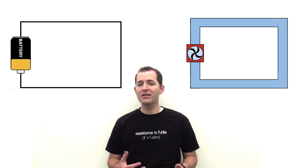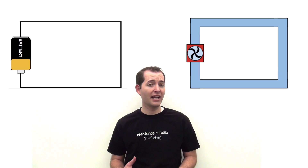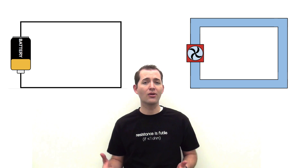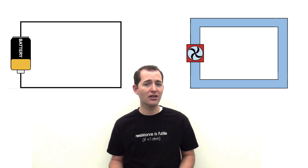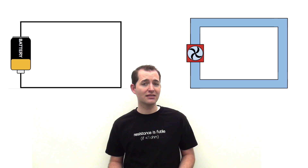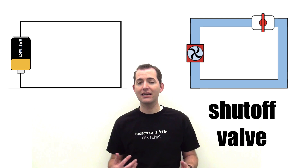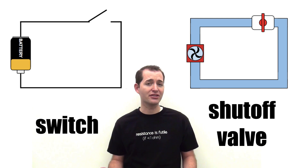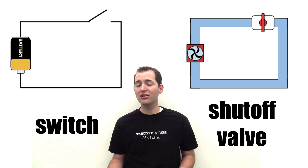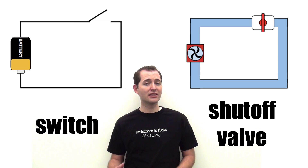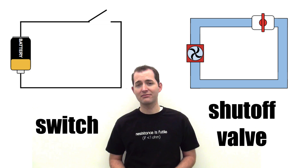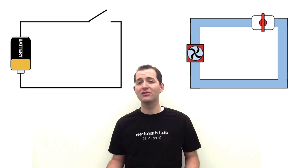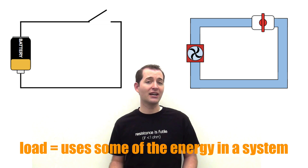In both situations, in our water system and our circuit, we can have something that shuts off the flow of water or the electrical current. In the case of the water system, this is a shutoff valve. In the case of our electrical circuit, this is a switch. The switch breaks our closed circuit or closed loop, which stops the flow of electricity.